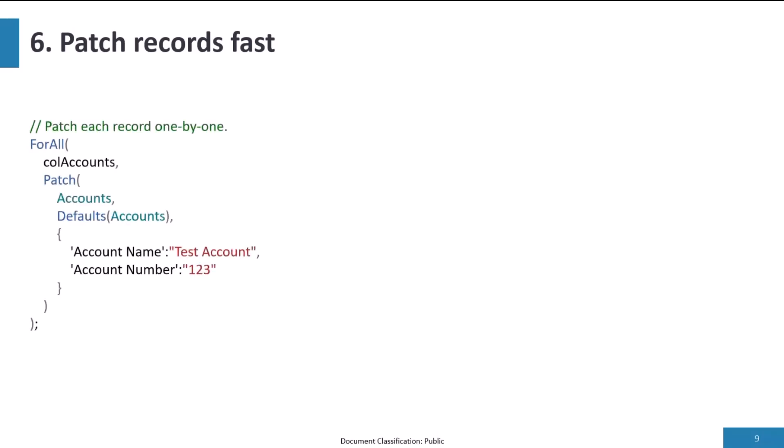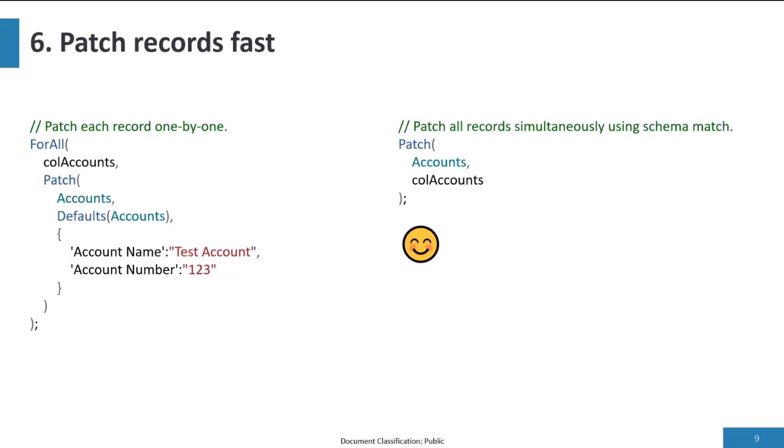Tip six: patching records fast. Many of us use patch functions like this — a ForAll loop going through a collection of accounts and patching each one, processing them one by one. An alternative is the schema match approach. There are great blog articles from Matt DeBaney and Microsoft Learn documentation on this. With less code and similar to the Concurrent function, these patch statements run simultaneously, making this second approach likely much, much faster.